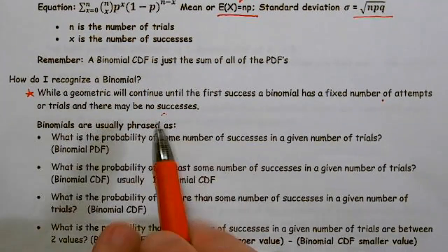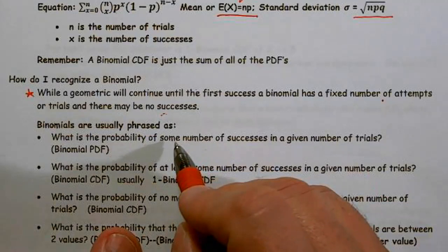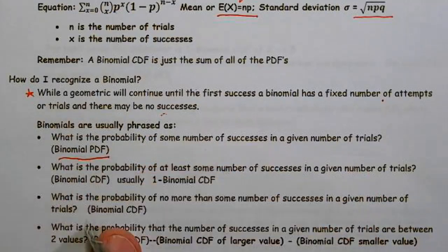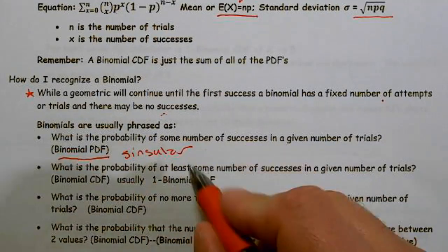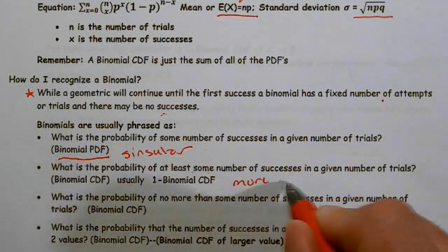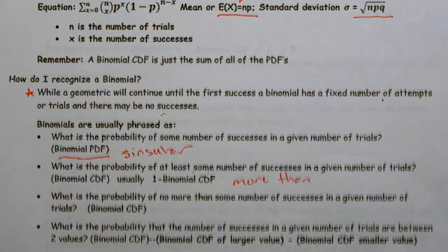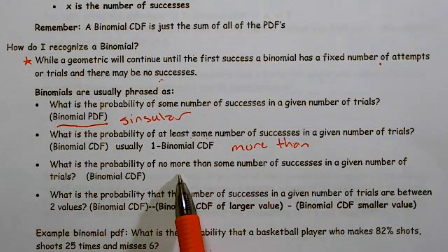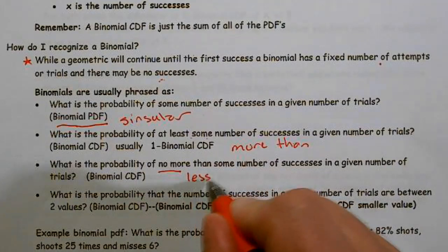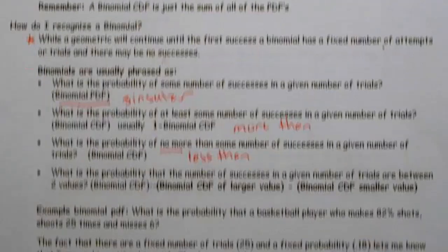So binomials — how are they usually phrased? 'What is the probability of a certain number of successes in a given number of trials?' If we were looking for a specific number of successes, that's going to be a PDF — a singular value. 'What's the probability of at least some number?' or 'more than?' — those are going to be one minus a binomial CDF. 'No more than' or 'less than' is going to be a CDF. Remember, a CDF is just a sum of all the PDFs.